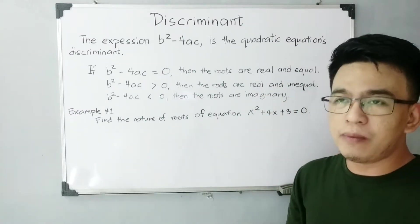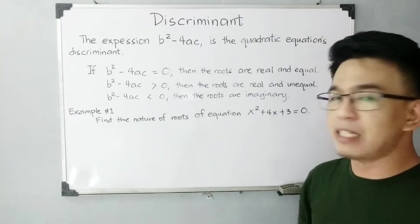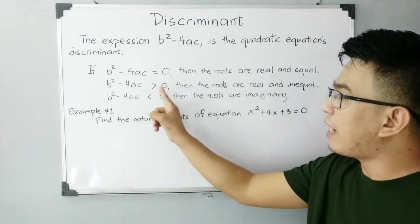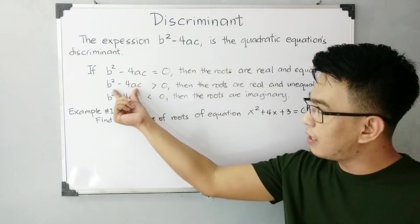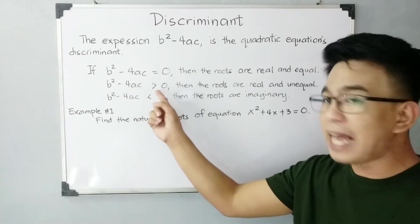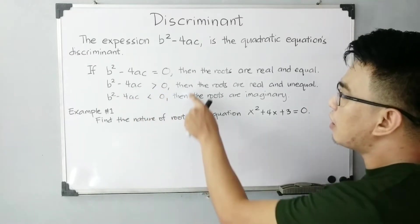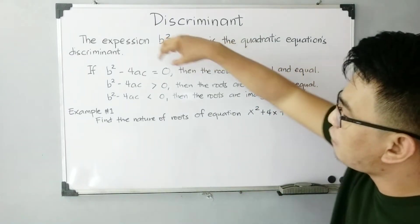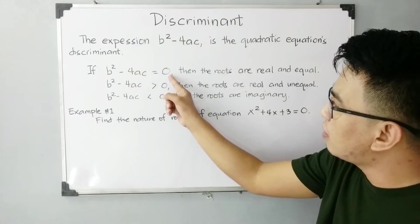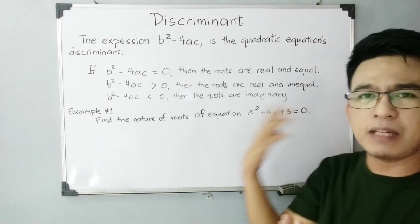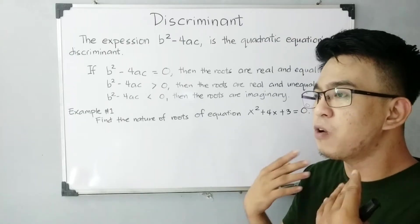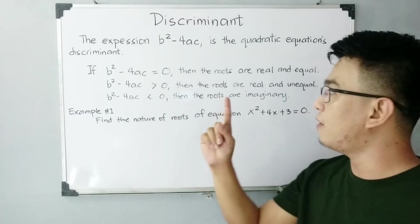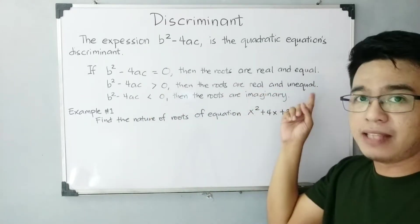We already know what real numbers mean from the real number system. Next, if b squared minus 4ac is greater than zero — if your discriminant is greater than zero — we can say that the roots are real and unequal. If the discriminant is zero, the roots are real and equal, meaning the values of the roots are the same. If the discriminant is greater than zero, the roots are real but unequal.